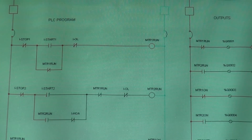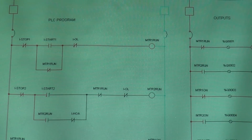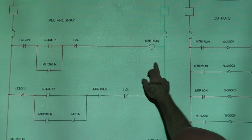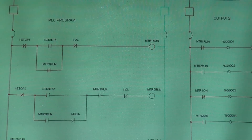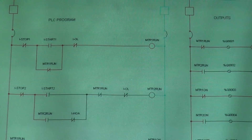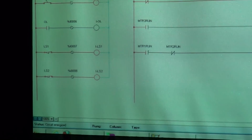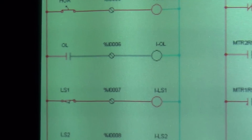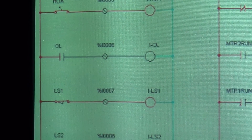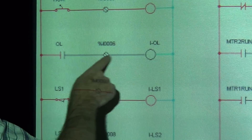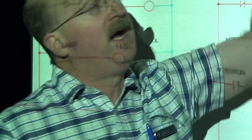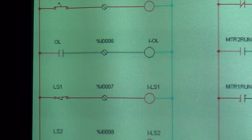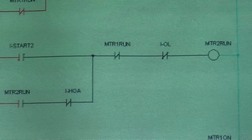Now if I look over here, my overload contacts are closed right now. If I look down there, the overload contacts — come down here and take a look at that input. What do you have there on IOL? Normally open contacts. So when the overload trips, those contacts close, energize that coil, and they will in turn open those overload contacts up there.